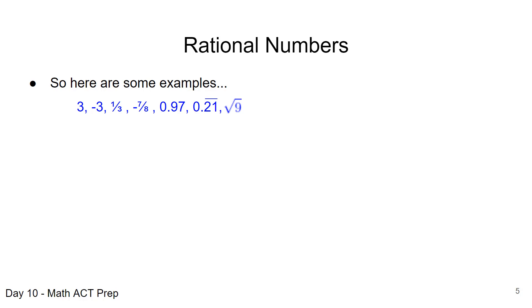Even something like 0.21 with the bar over it, which means it's a repeating decimal—the 2-1-2-1-2-1 is repeating—that is a rational number because we can turn that into a fraction. A perfect square, when we take the square root of a perfect square—the square root of 9 in this case is 3—that gets us back to the integer value 3. So perfect squares when we take the square root, those are rational numbers.